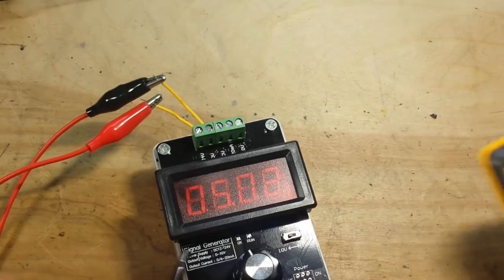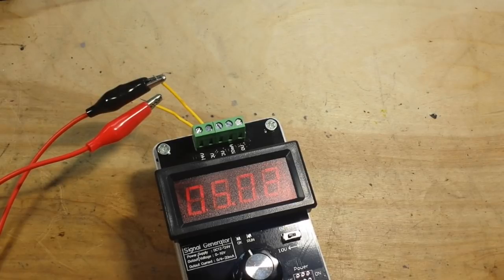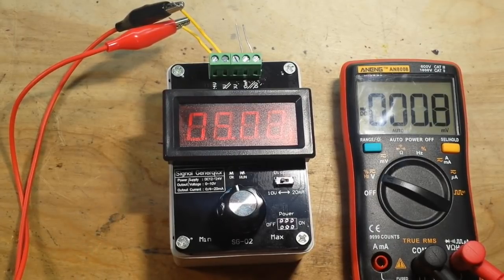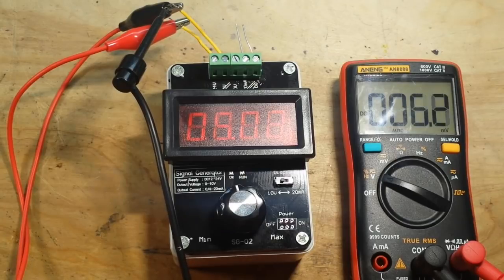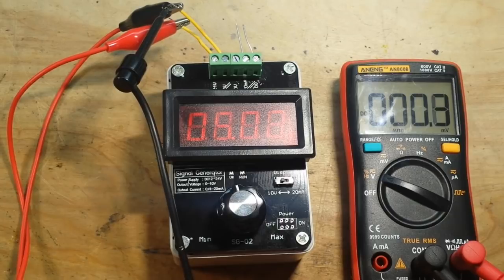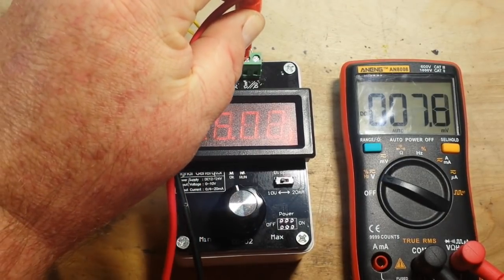Now, we'll get another meter because the Fluke doesn't do current. And we'll check out the milliamp output. Okay. I got the Aneng out. It has no trouble with current. So we'll hook up our ground again.